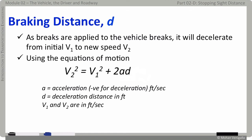Of course, it's going to be negative for deceleration and it's in feet per second squared. d is the deceleration distance in feet. v1 and v2 are in feet per second.